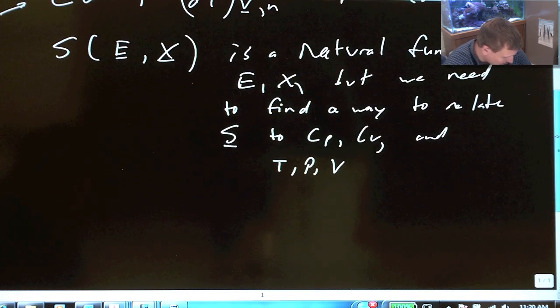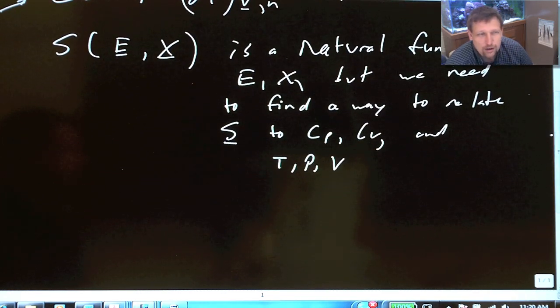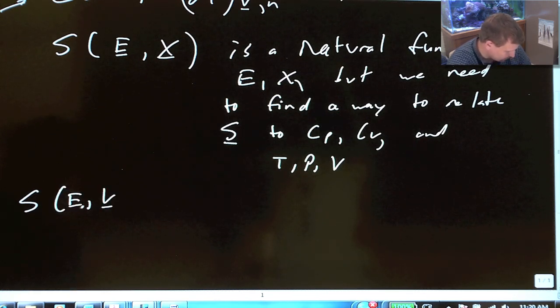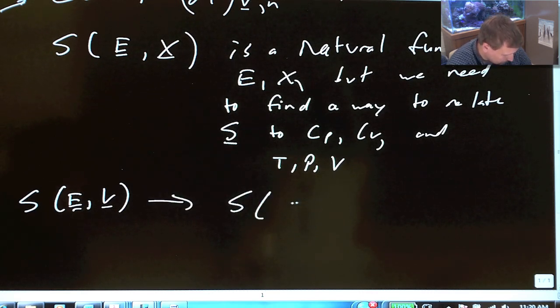So, let's start by trying to get a new dependency of entropy on the other variables that are available in the system. What we want is S, instead of a function of E and V, after we've substituted the mechanical sense of variables, what we want is S as a function of T and V.